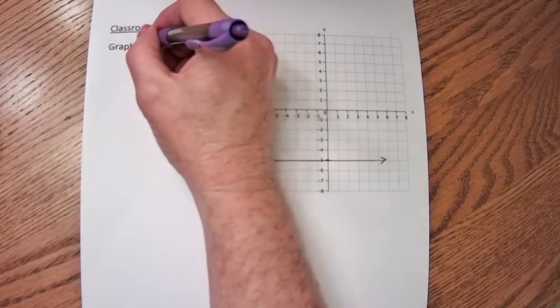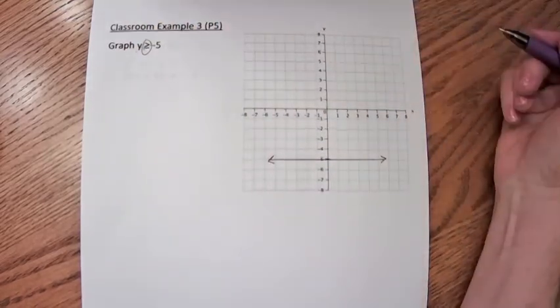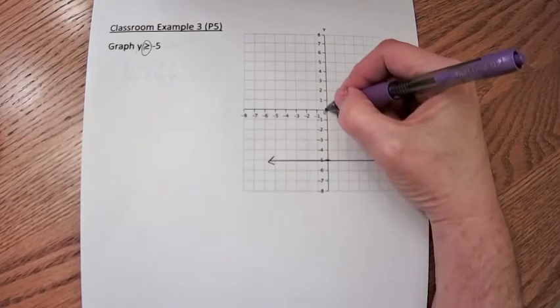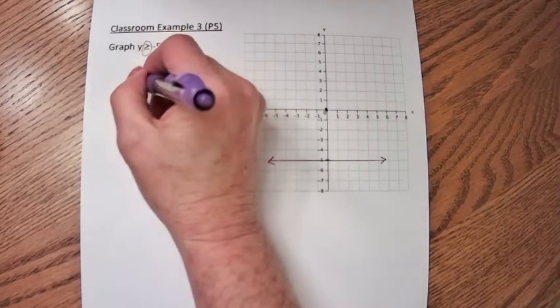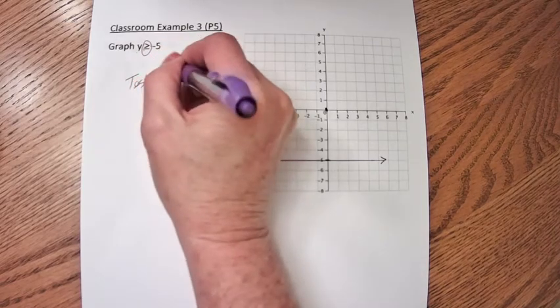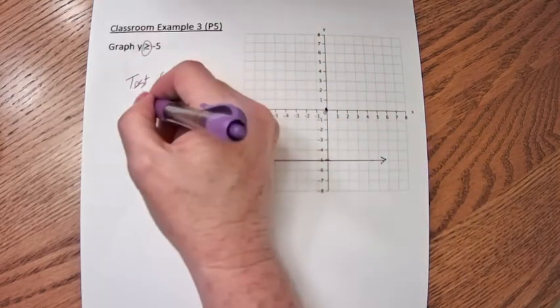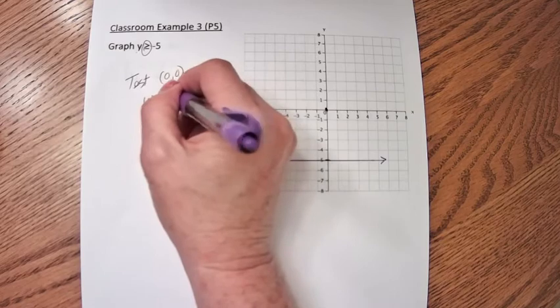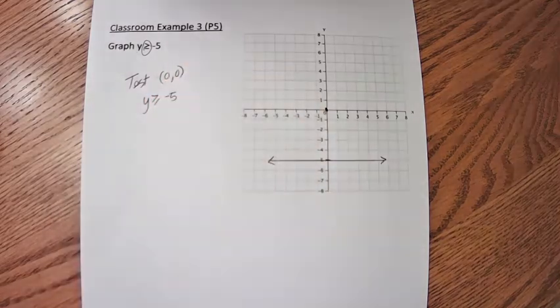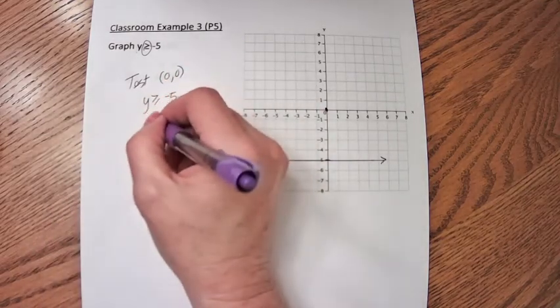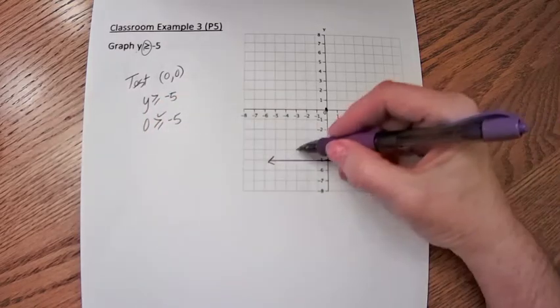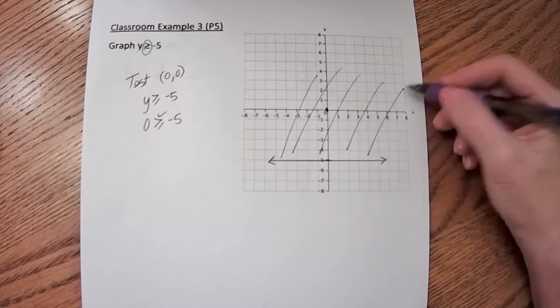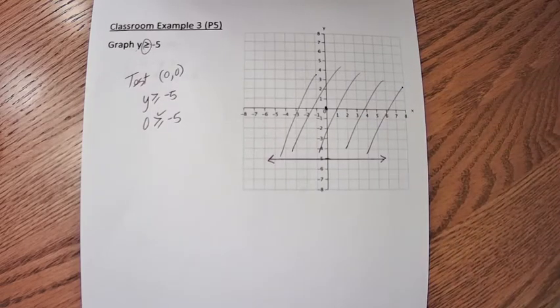Well, we want the y's that are bigger. So I'll pick the origin here, that's the point (0, 0). That will be my test point. So is y greater than or equal to negative 5? Plug in the y value of 0. Is 0 greater than or equal to negative 5? Yes it is. So this is going to be my solution region.